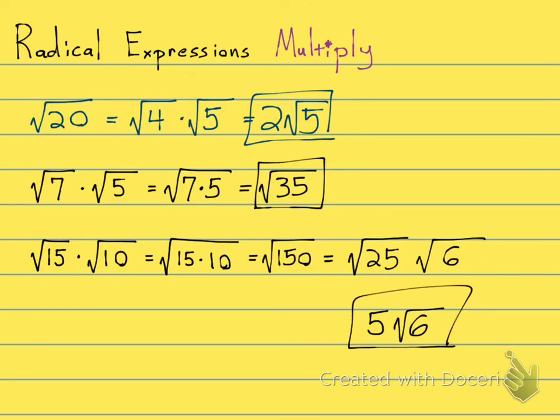So in this case, when they wanted me to multiply these two radicals, I can't simplify 15 and I can't simplify 10. Square root of 15, I don't know it. Square root of 10, I don't know it. But when I put them together, I end up being able to simplify. Pretty cool, huh?